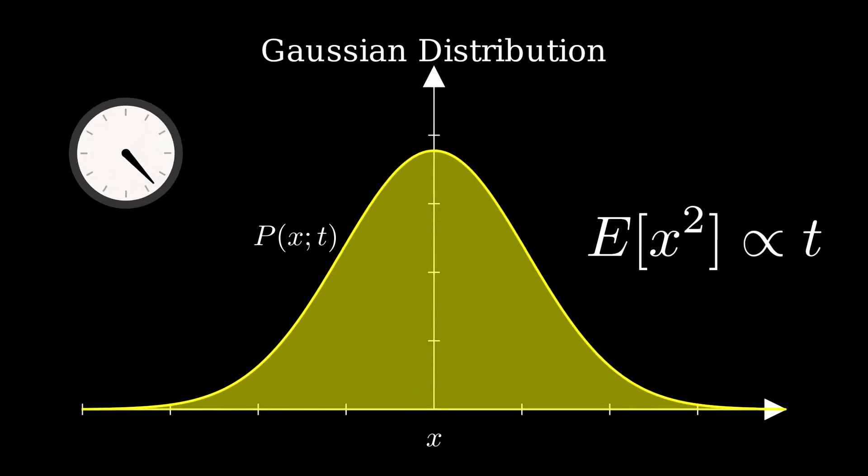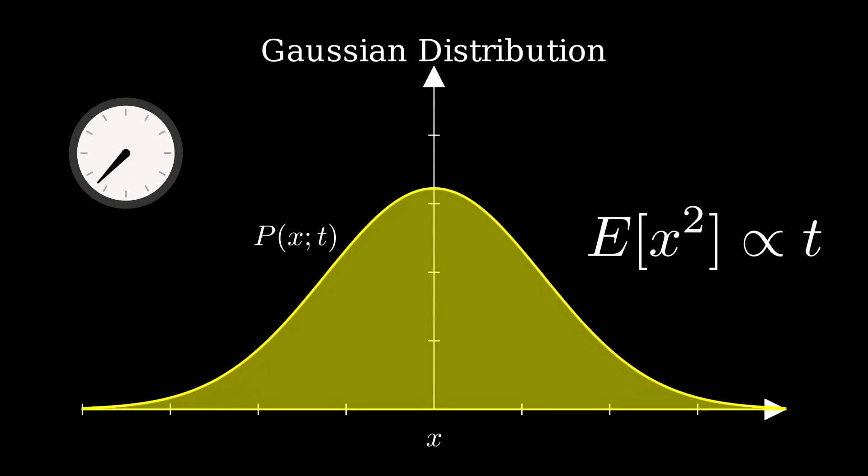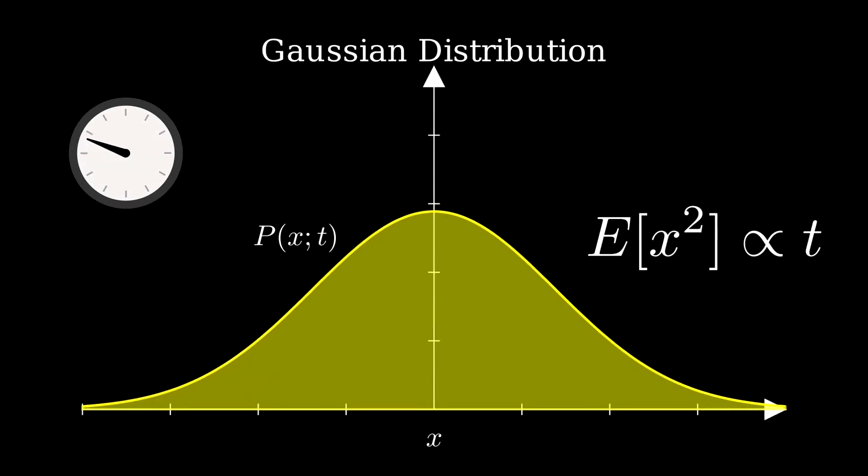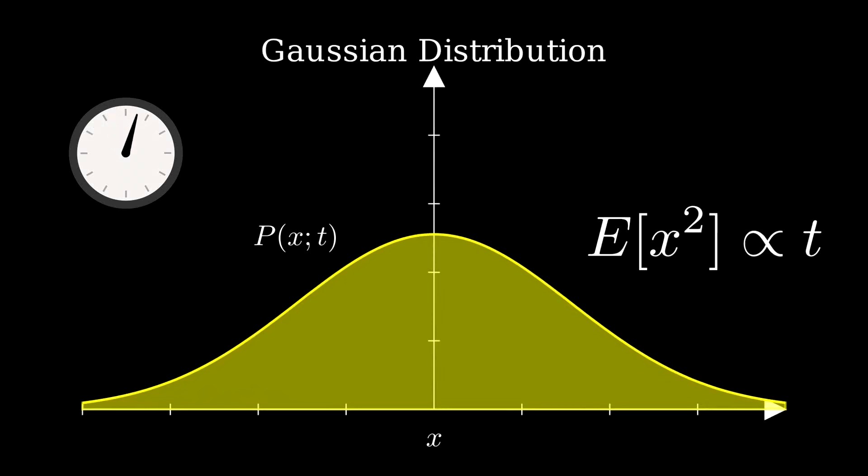In average, the particle stays on the same place, but its position carries more uncertainty as time goes by, because the standard deviation increases linearly with time as 6 times the diffusion constant times t.